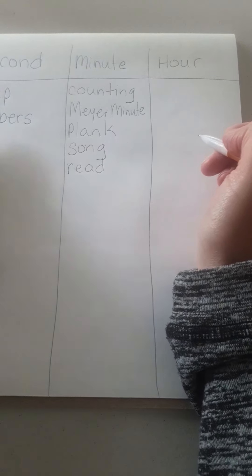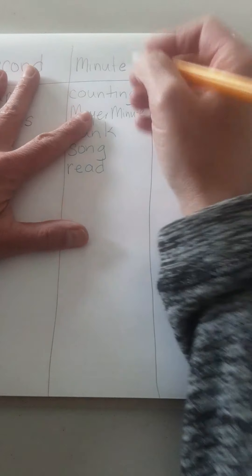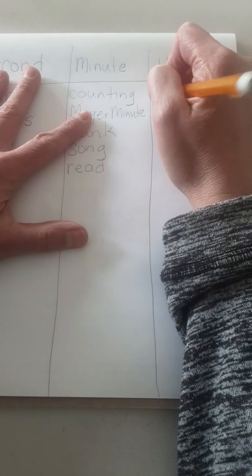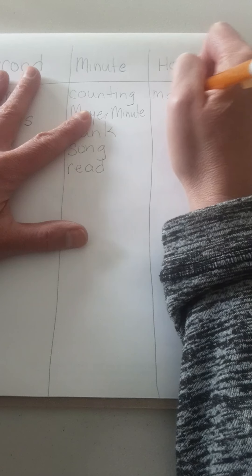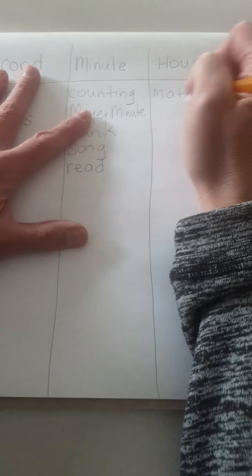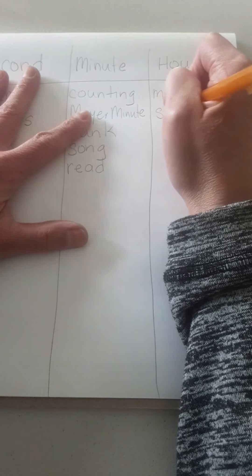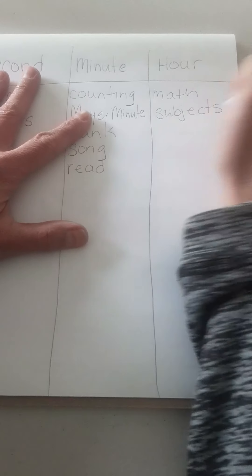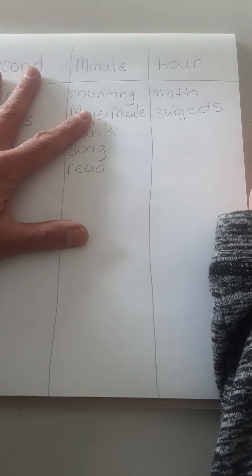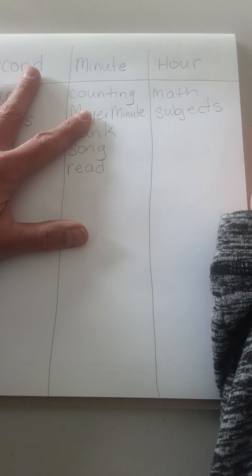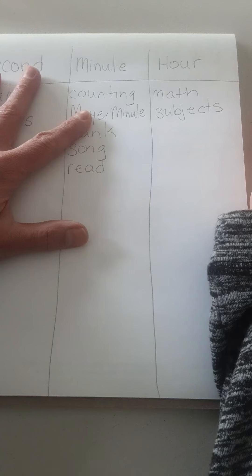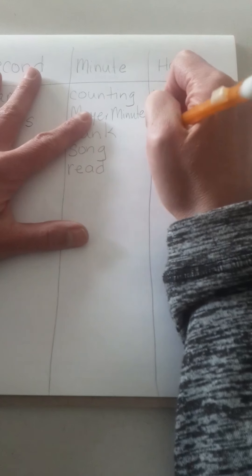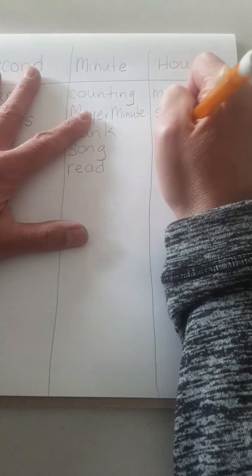Now for an hour. So math class is about an hour. So how about we put subjects when we're at school? Subjects takes us about one hour. When you go to PE and music, that is one hour. So I'll put specials down.